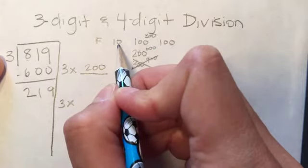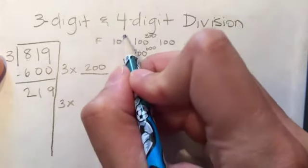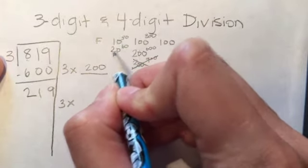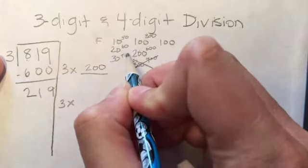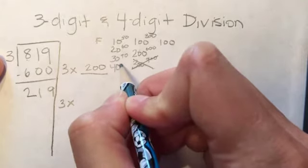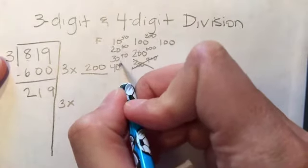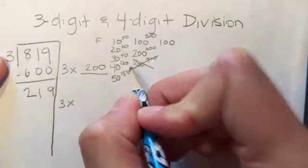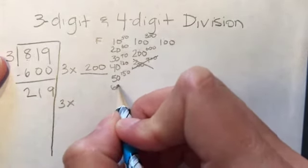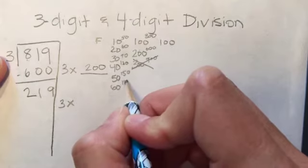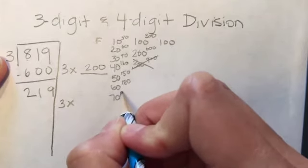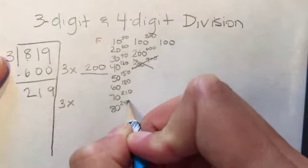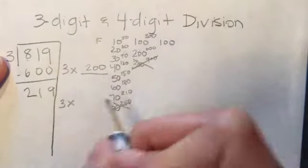So I'm gonna go back to the tens. Well, 3 times 10 is 30. 3 times 20 is 60. 3 times 30 is 90. 3 times 40 is 120. 3 times 50 is 150. 3 times 60 is 180. 3 times 70 is 210. 3 times 80 is 240, which is too much, so that's not going to work.